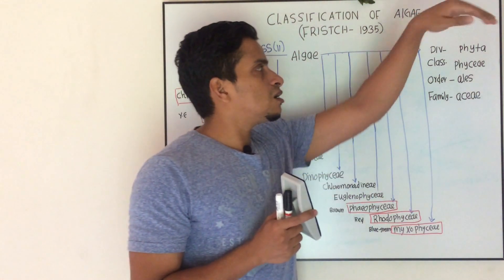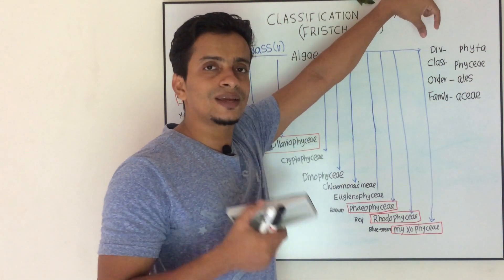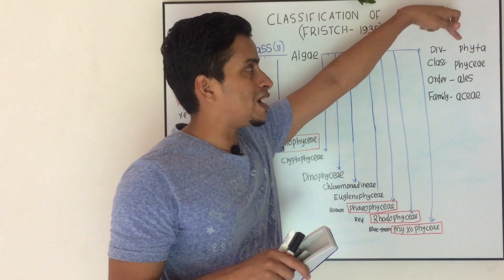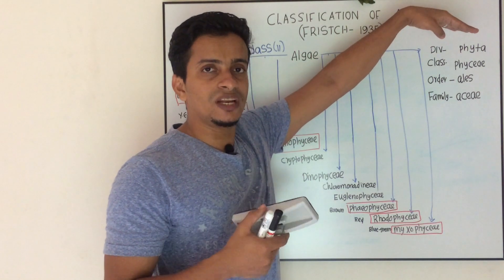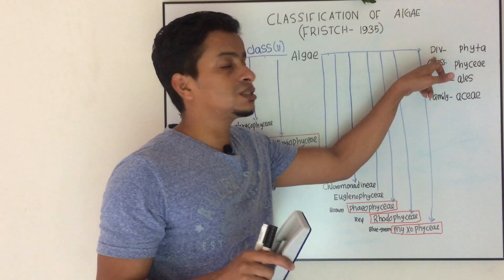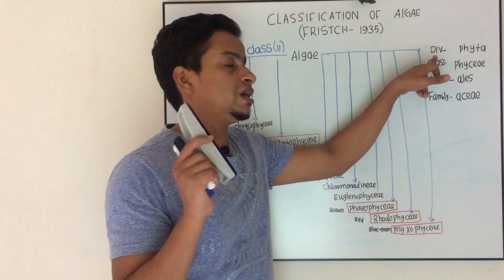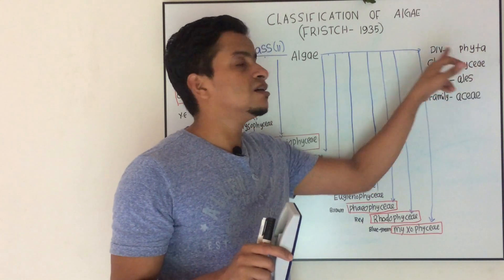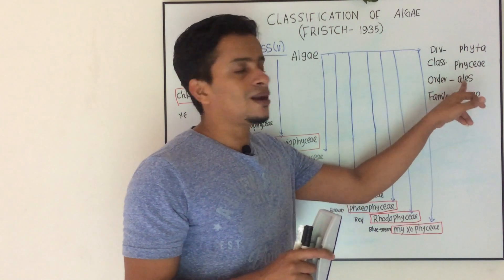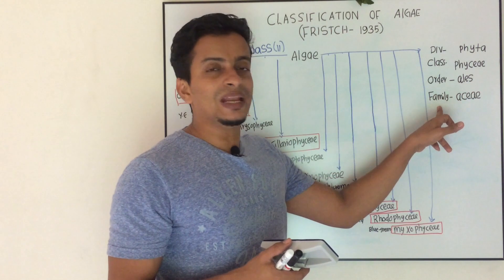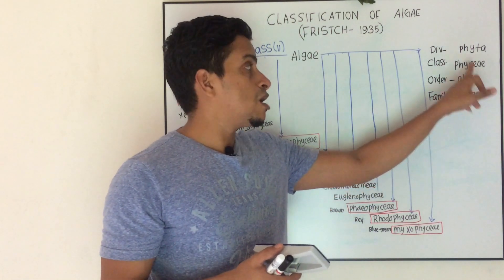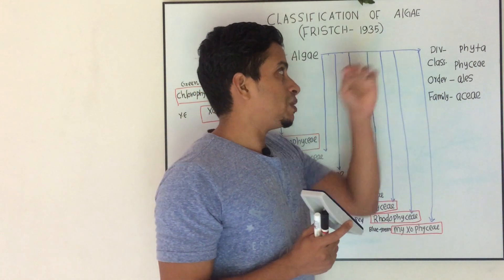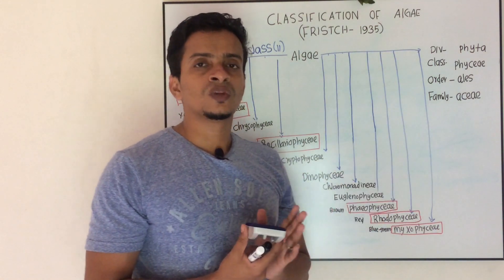In the case of algae, division ends in '-phyta'. For example, Chlorophyta is a division ending in '-phyta', which denotes the division of that particular group. If we represent a class, it ends in '-phyceae'. Order ends in '-ales', family ends in '-aceae'.